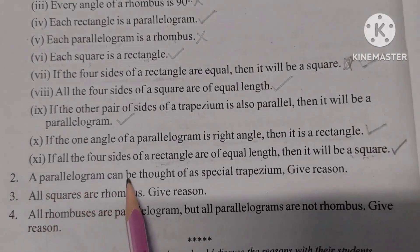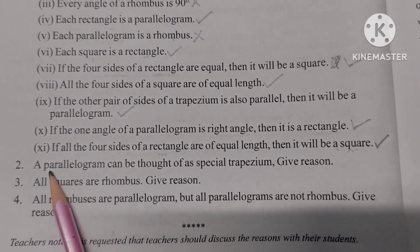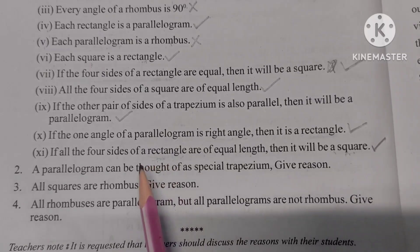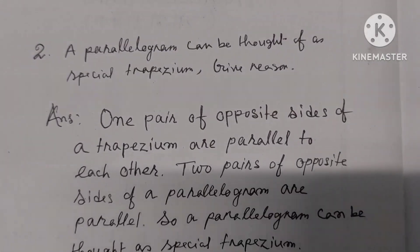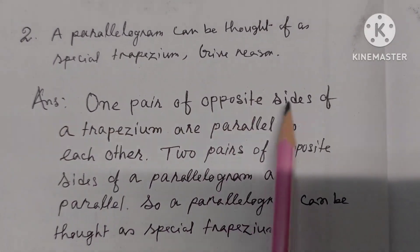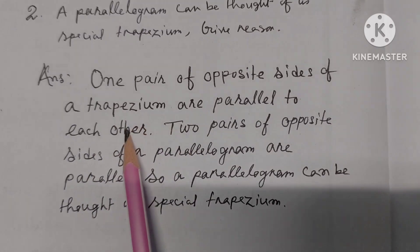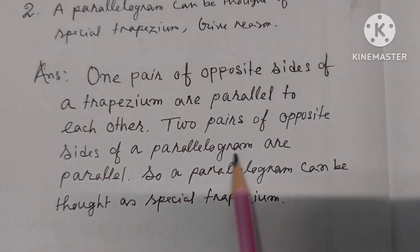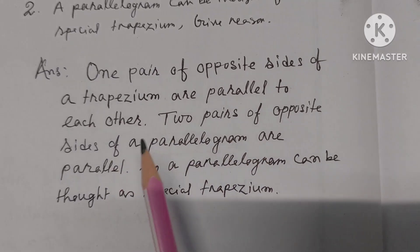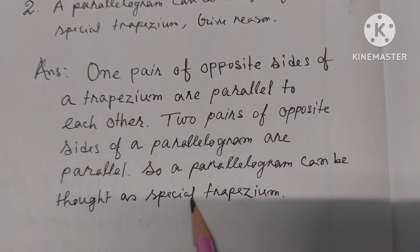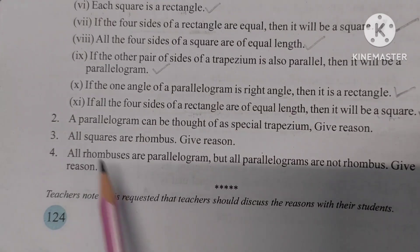Number 2: A parallelogram can be thought of as a special trapezium. Give reason. In a trapezium, one pair of opposite sides is parallel. In a parallelogram, two pairs of opposite sides are parallel. So a parallelogram has an additional pair of parallel sides, making it a special case of a trapezium.